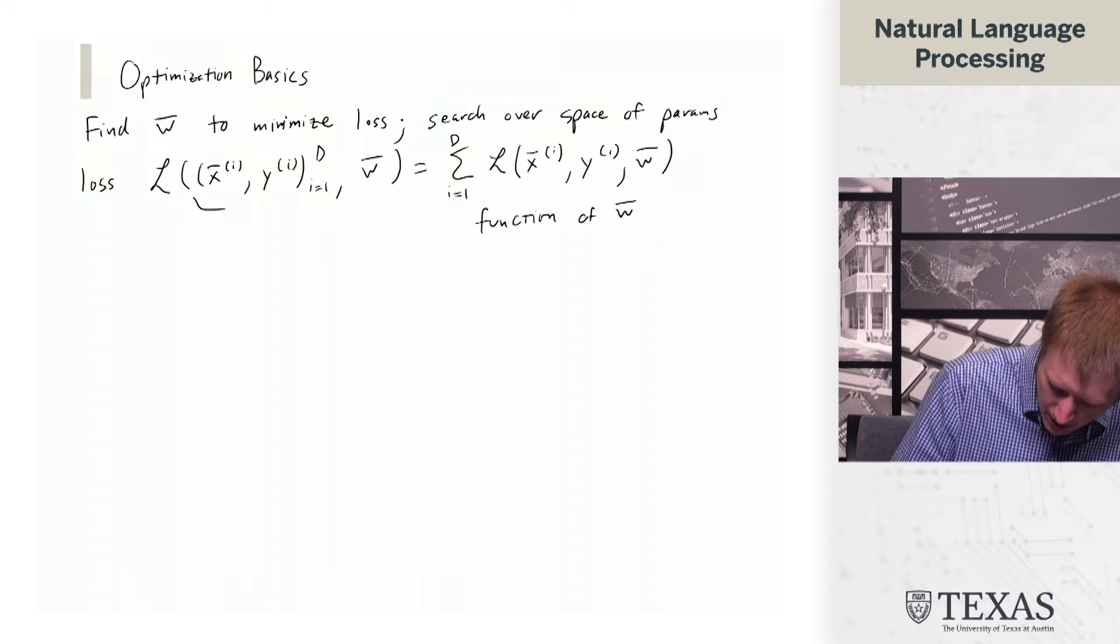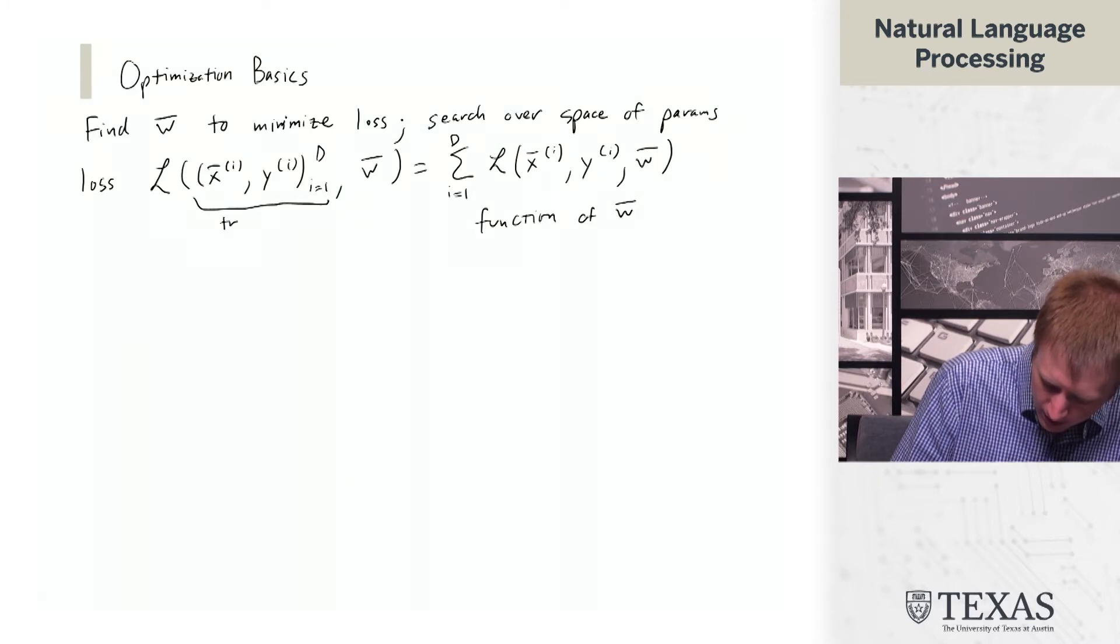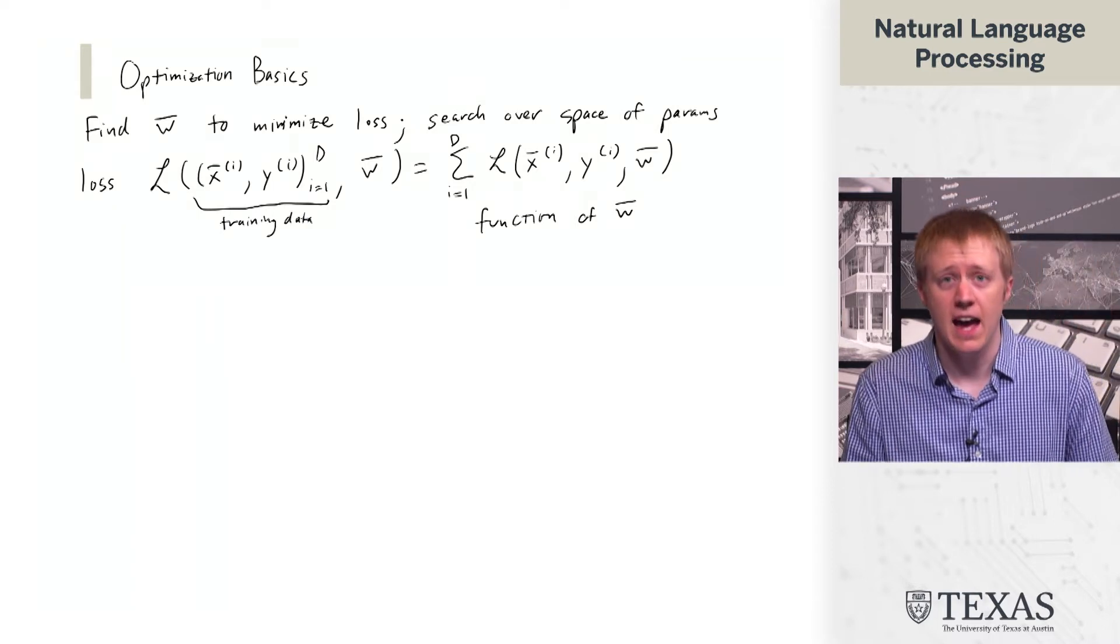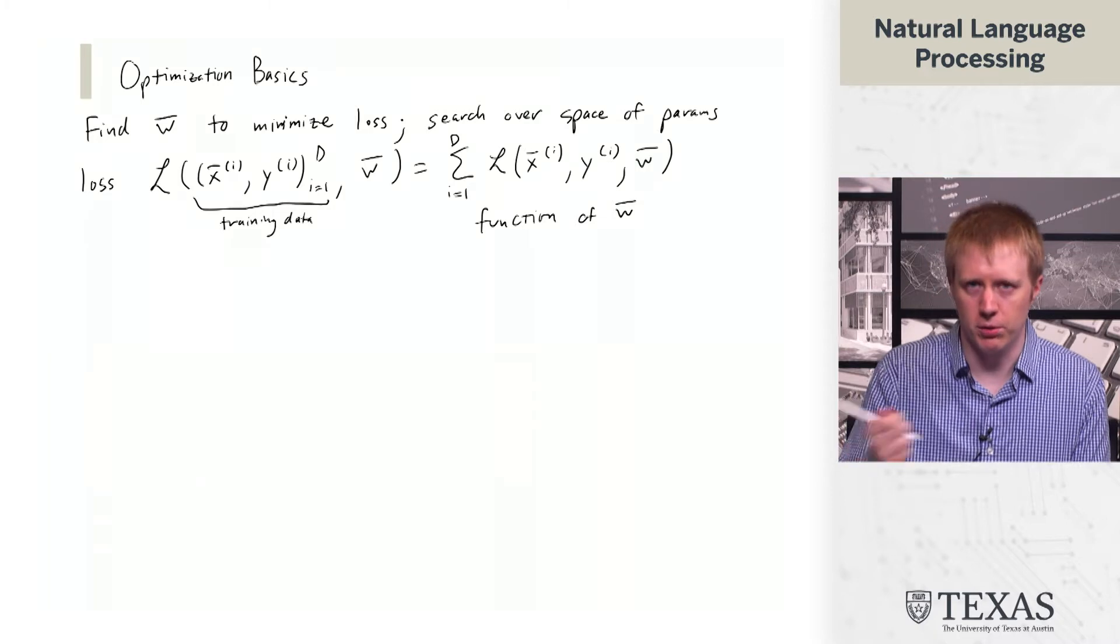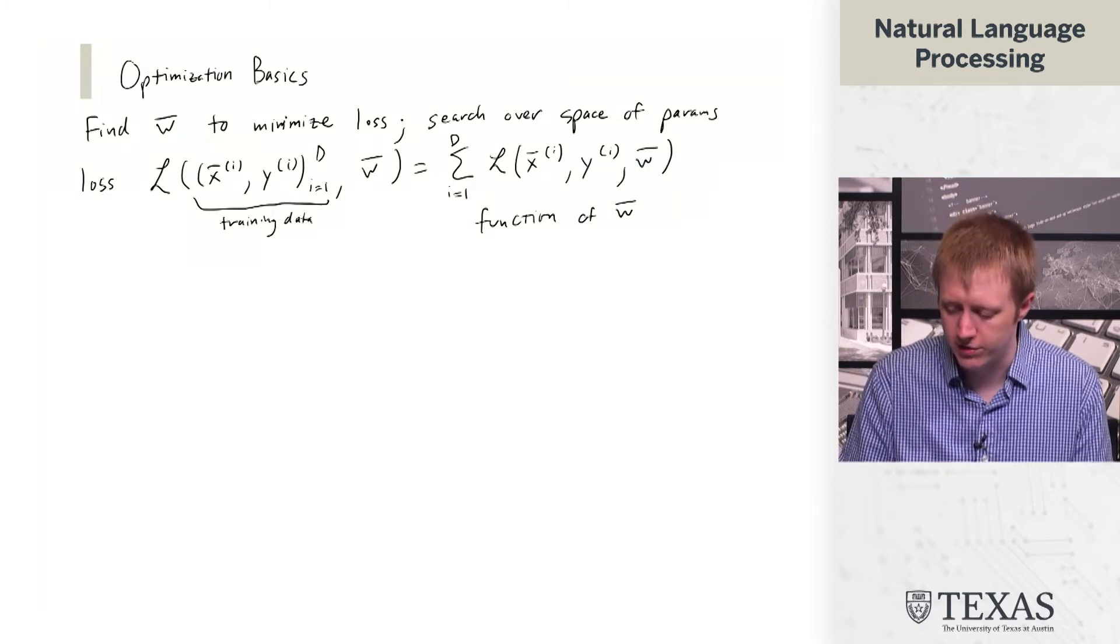We treat the training data as fixed, and W is the variable that we're going to be changing to try to find a good value of this loss function.